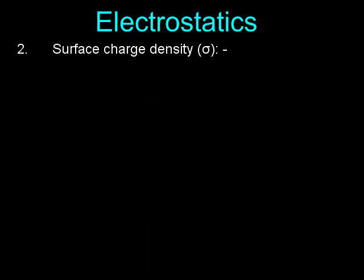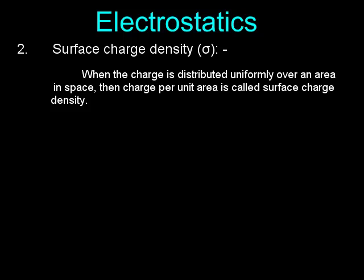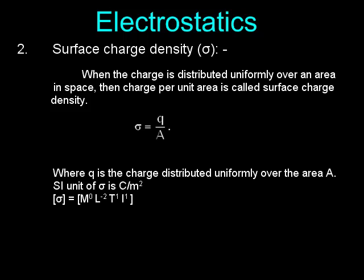Surface Charge Density (σ): When the charge is distributed uniformly over an area in space, the charge per unit area is called surface charge density. σ = q / A, where q is the charge distributed uniformly over the area A. SI unit of σ is C/m².